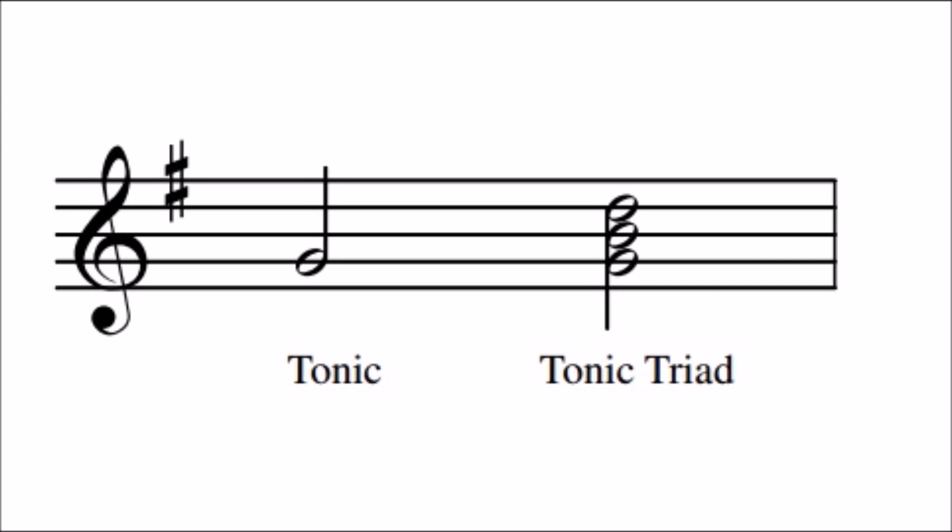In the example you can see here, the key signature is G major and the tonic is therefore the note G. The tonic triad consists of the first, third, and fifth notes of G major, that is G, B, and D.